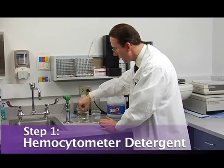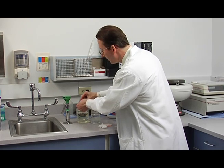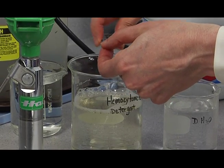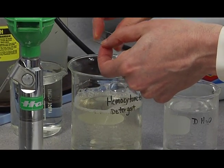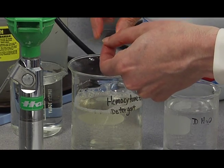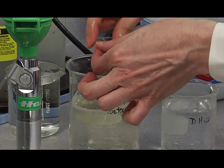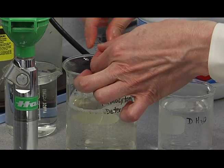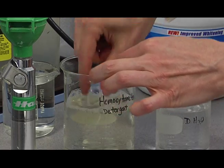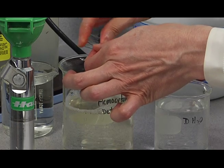And you'll swish it in the hemocytometer detergent. You can scrub it between your thumb and forefinger like this. And I pay particular attention to those corners and edges that I showed you. And I do that three times or sometimes four times, depending on how dirty it looked to begin with. Even if I've cleaned it the night before, I still clean it again in the morning.